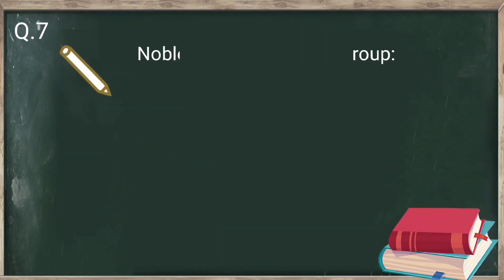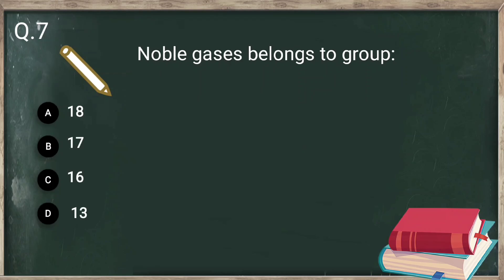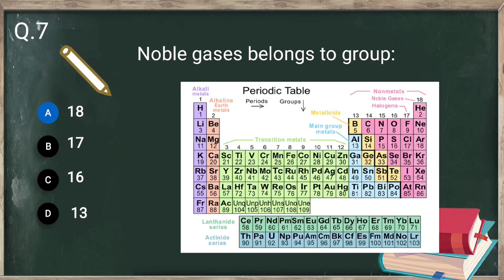Question number 7: noble gases belong to which group? As just discussed, the 18th group elements are known as noble gases. The last group of the periodic table — group 18 — is known as noble gases.